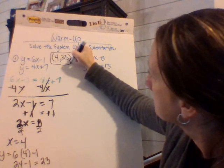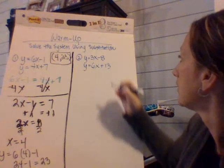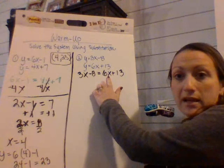Your second example, very similar. They're both in slope intercept form. So again, we're going to set them equal to each other. Again, my x's are on opposite sides. So I'm going to move the 6x to be with the 3x, and I'm going to do that by subtraction because it's positive.